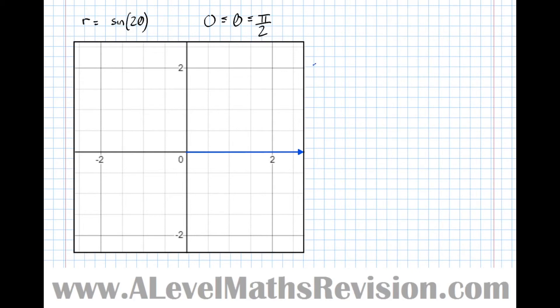So we're now going to try and sketch the function r equals sine 2 theta for theta lying between 0 and pi over 2. Let's consider the case where theta equals 0, i.e. we're lying somewhere on this initial line. When theta equals 0, the distance from the origin equals sine of 0, which is 0, therefore the first point is there.